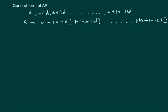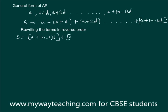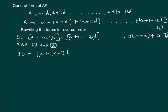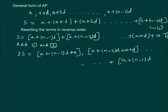Rewriting the terms in reverse order, S equals (a plus (n minus 1)d) plus (a plus (n minus 2)d) and so on, plus (a plus d) plus a. Now if we add equation 1 and equation 2, we get 2S. Each pair of corresponding terms gives: (a plus (n minus 1)d) plus a, and (a plus (n minus 2)d) plus (a plus d), and so on, with the last term being (a plus (n minus 1)d) plus a.